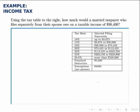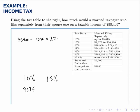For this person, the amount that goes into the 10% bracket is $9,075. To find how much goes into the 15% bracket, we subtract 36,900 minus 9,075, which gives us how many of their dollars fit into that bracket. The difference is $27,825, so $27,825 goes into the 15% bracket.